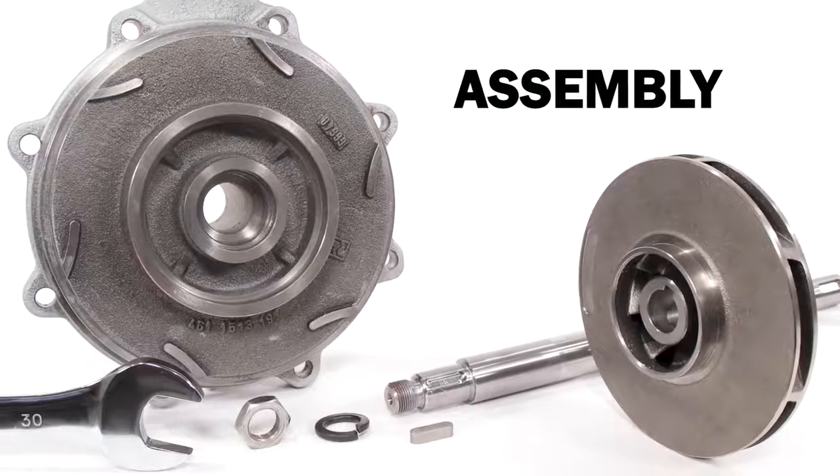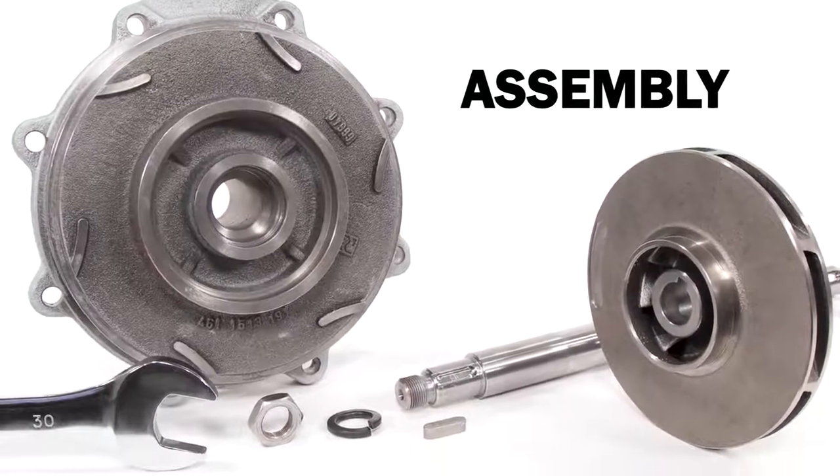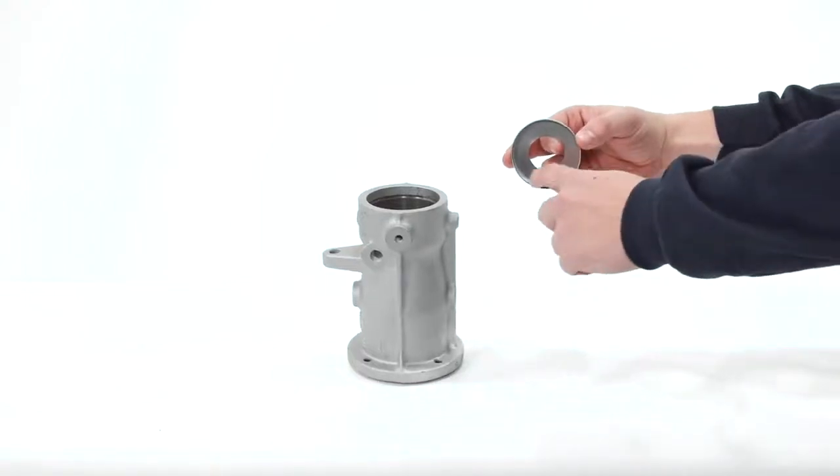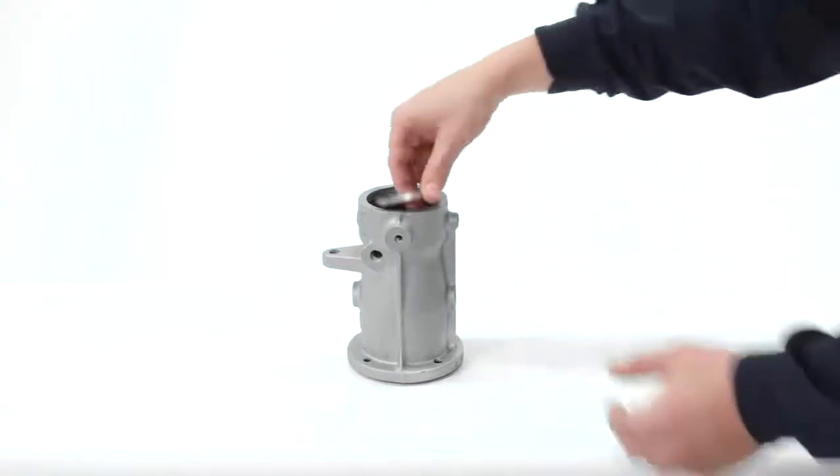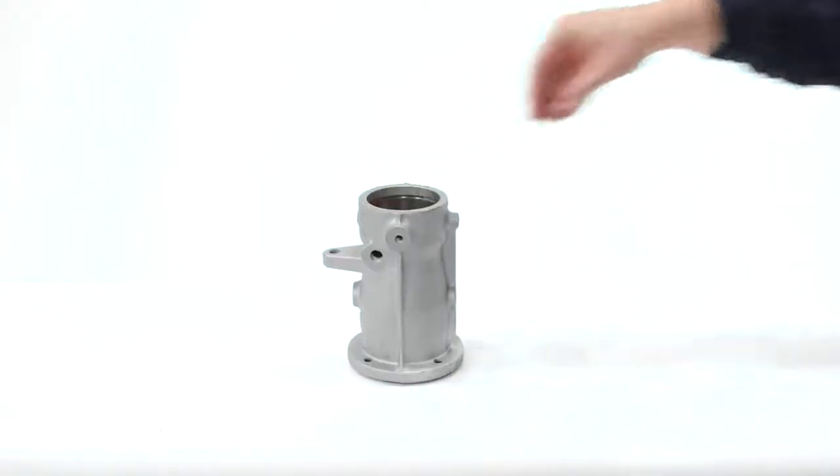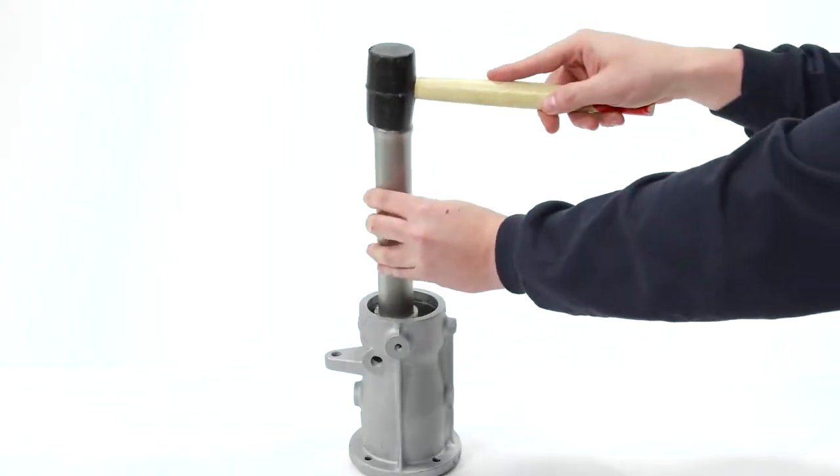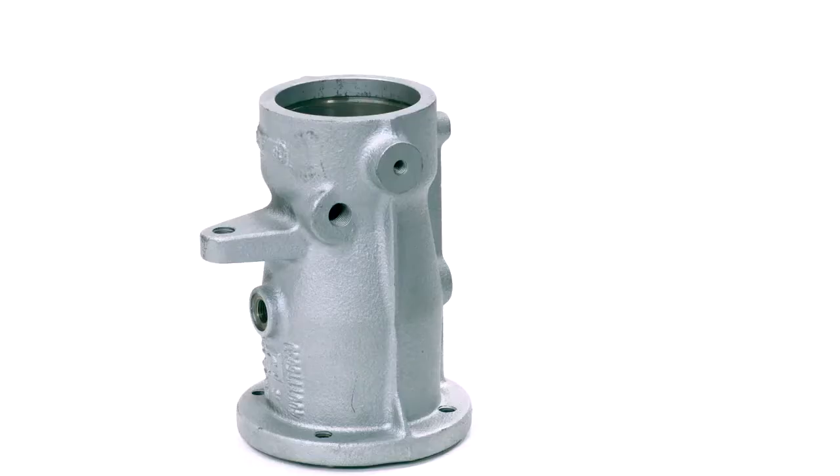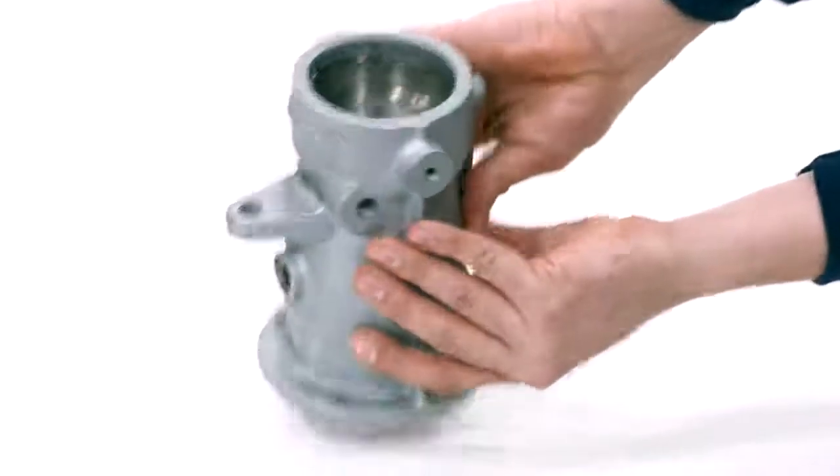Allweiler NTT thermal oil centrifugal pump assembly: Insert the grease cover into the top of the bearing housing. Use a large dowel to assist if necessary. Flip the bearing housing over.